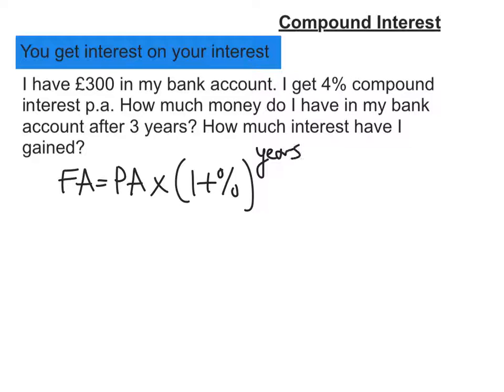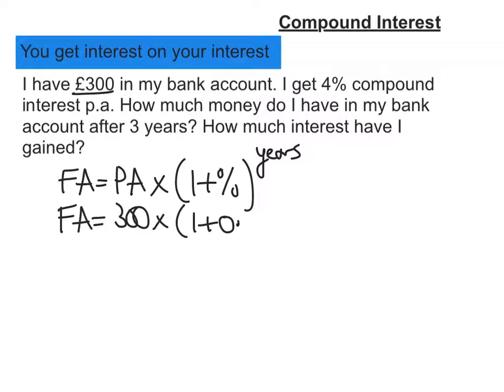So in this example, we've got future amount equal to present amount 300, times by 1 plus the interest rate as a decimal, 0.04, to the number of years, which is 3.